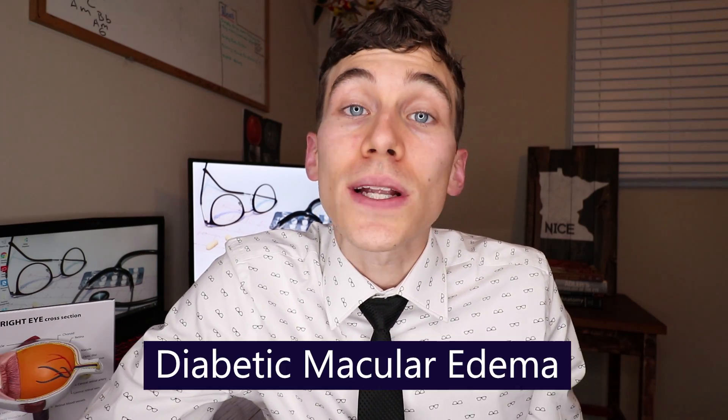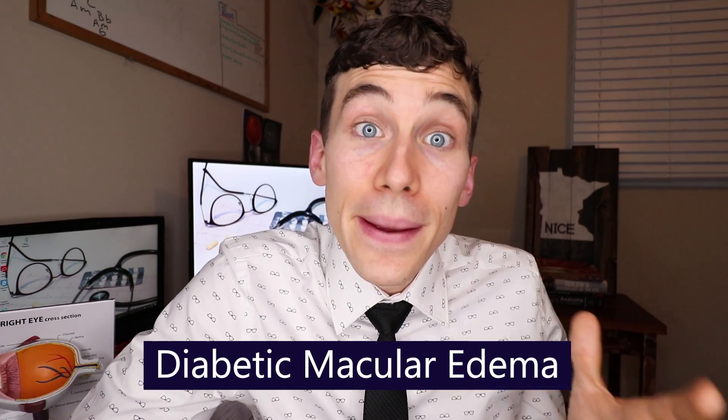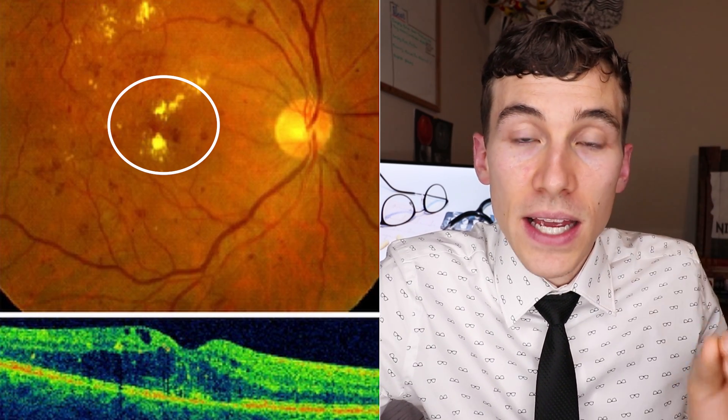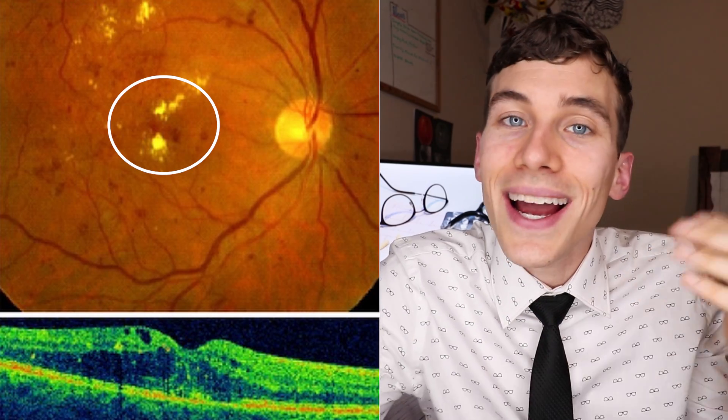One of the most frustrating things is that many patients neglect to get their eyes checked because their vision feels fine. Unfortunately, at any stage of diabetic retinopathy you can develop diabetic macular edema — where blood vessels in the back of the eye break open, leaking fluid, blood, and fatty contents into the macula, the most critical part of the retina. The macula begins to swell like a blister, causing distorted and blurry vision. If the fluid accumulation becomes significant and isn't caught or treated, the retinal cell architecture can be permanently damaged.